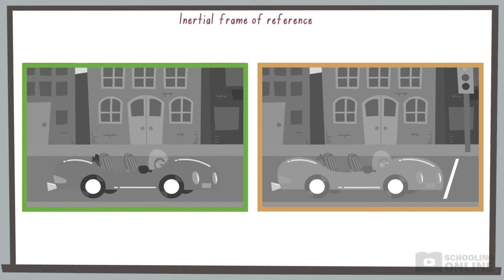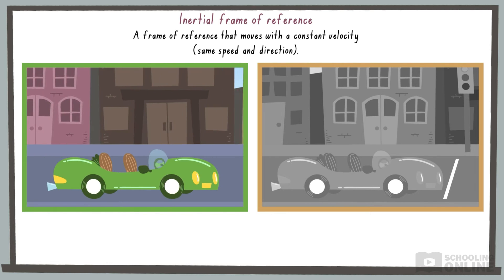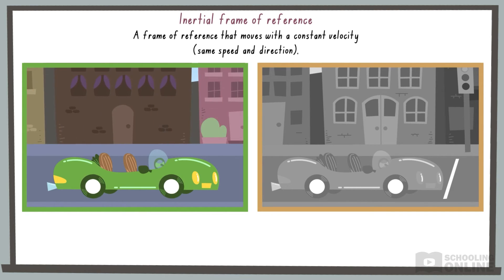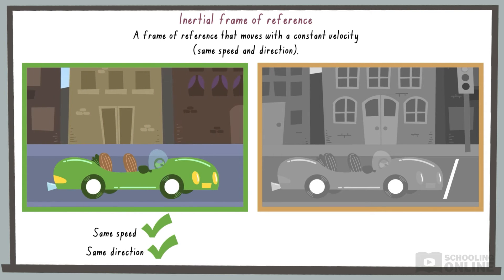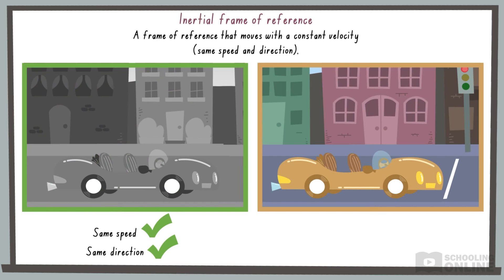In physics, an inertial frame of reference is one that moves with a constant velocity. A car travelling at 40 kilometres per hour along a straight road is an inertial frame of reference. Another example is a car stopped at a traffic light.